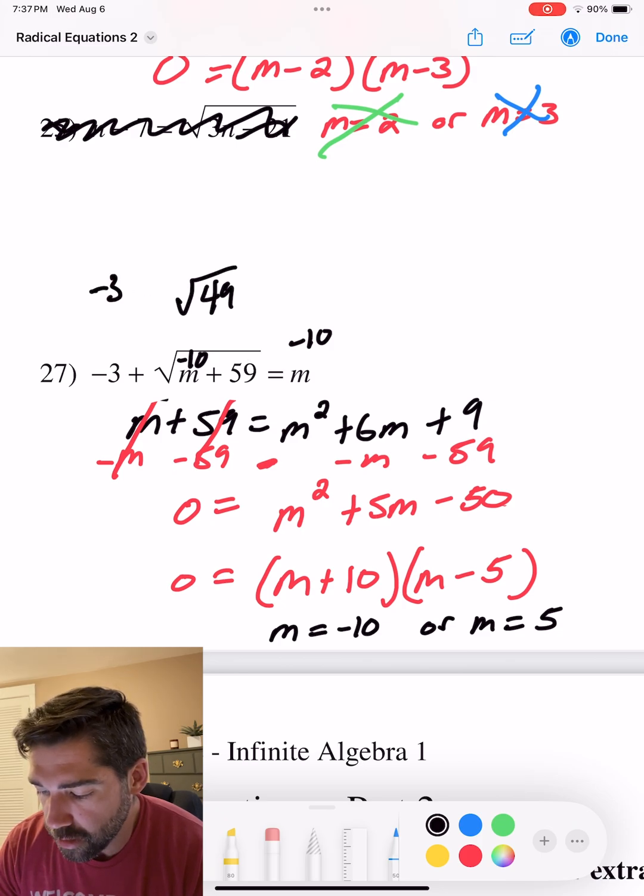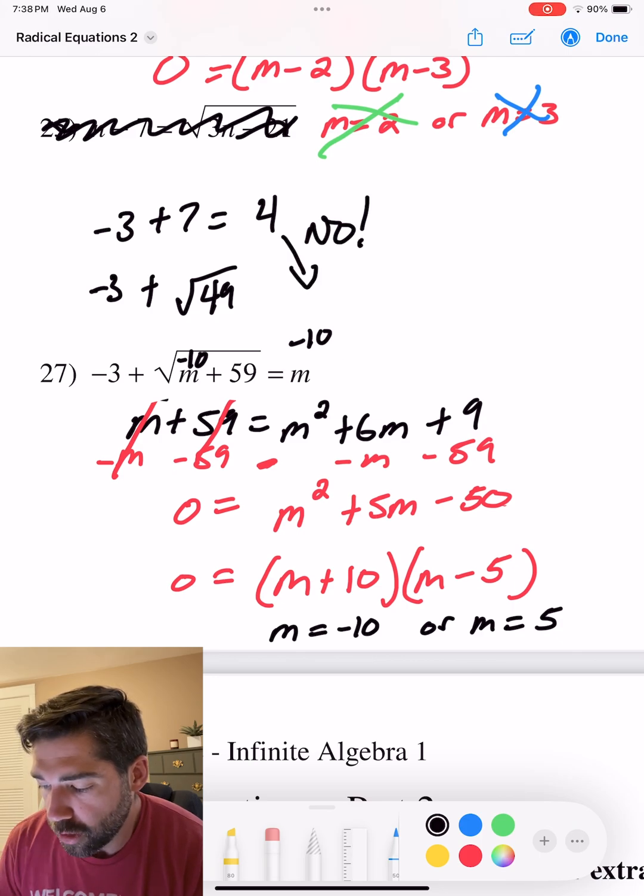I know what that is. Square root of 49 is 7. So negative 3 plus 7 is 4. Is that equal to negative 10? No. So that doesn't work.